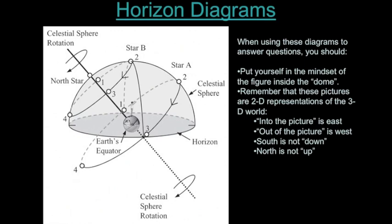This is figure one from the lecture tutorial. There's a person standing on the Earth in the northern hemisphere — somewhere between the north pole and the equator. That dome above them is basically their sky. The horizon is drawn as an imaginary line that stretches off the Earth to get to the dome of the sky, the celestial sphere. There are also star paths drawn onto this diagram.